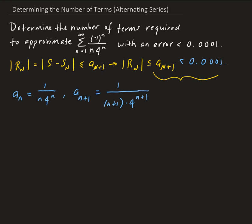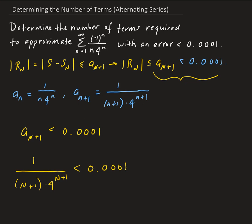Now this is what we want to solve for — we want to find what n satisfies this inequality. So we have 1 over (n+1)·4^(n+1) less than 0.0001. This inequality is not possible to solve algebraically, so we have to rely on technology. We can solve this on the calculator, so let me bring that up.